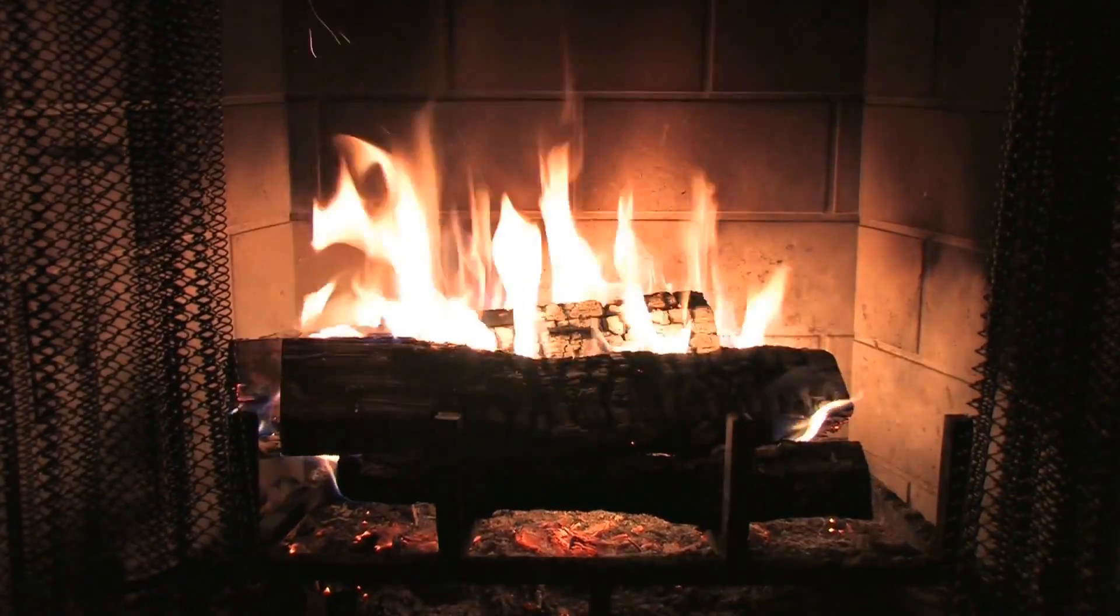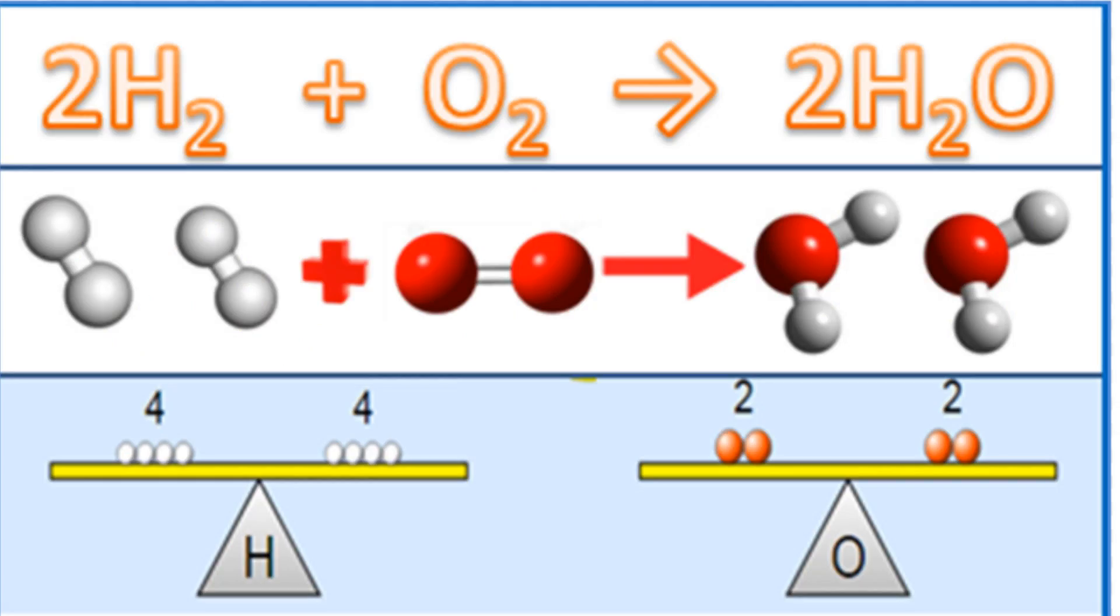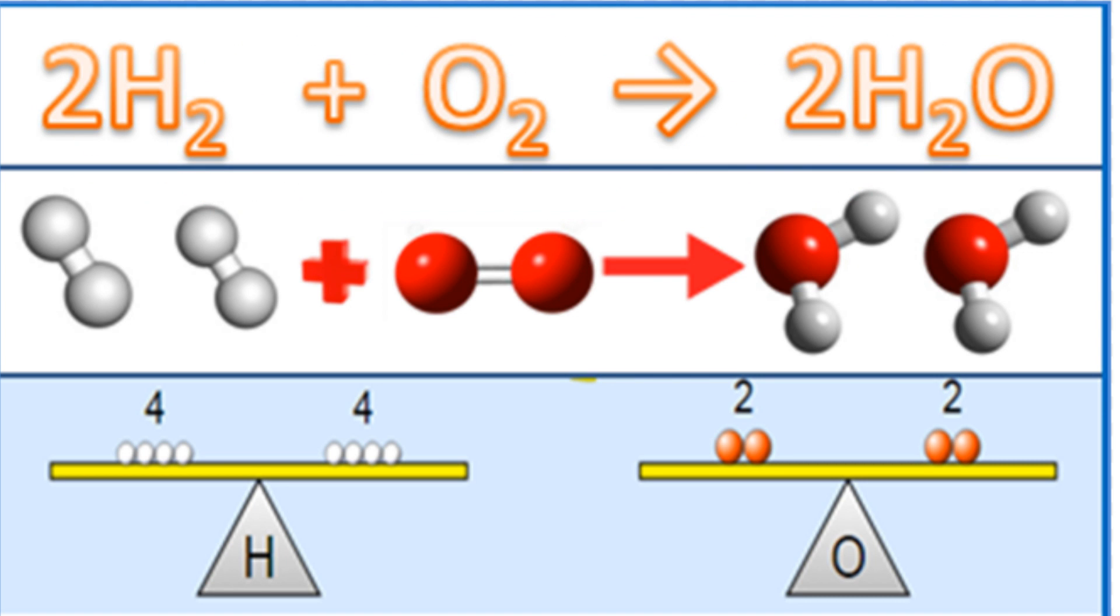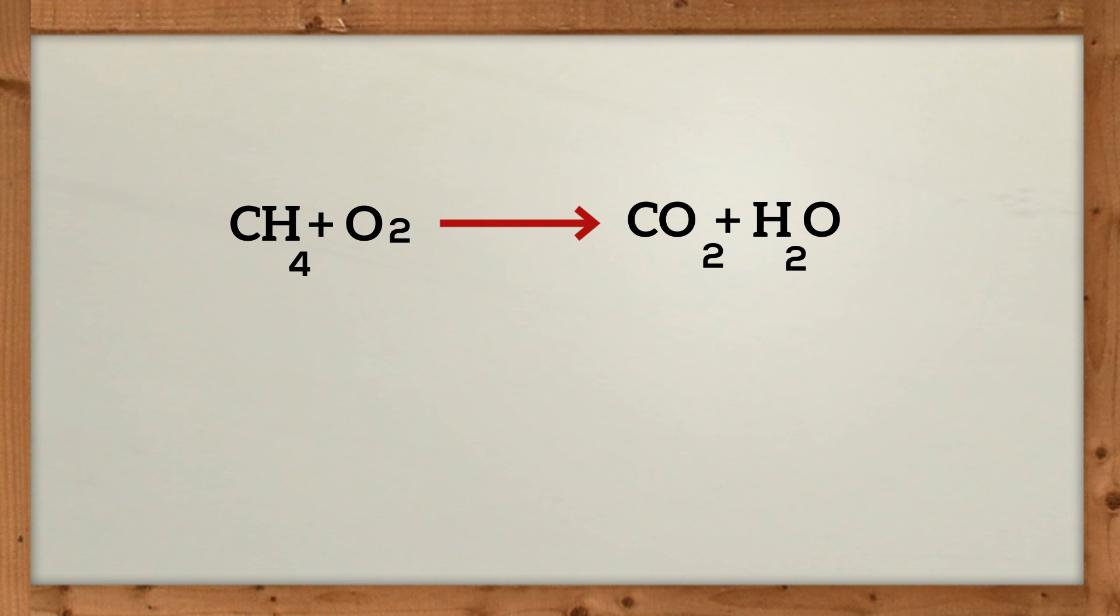A chemical reaction can be represented by using a chemical equation. Let's break down this chemical equation and see what information it contains.